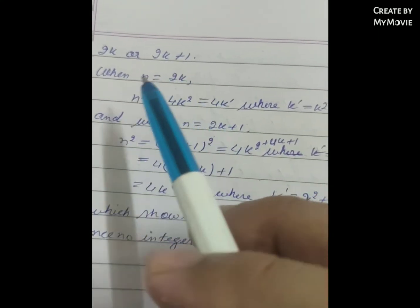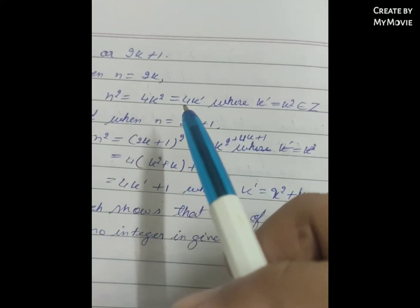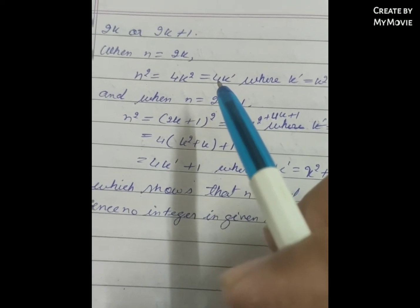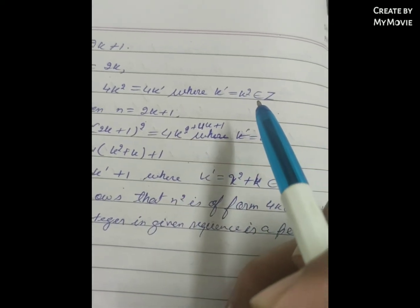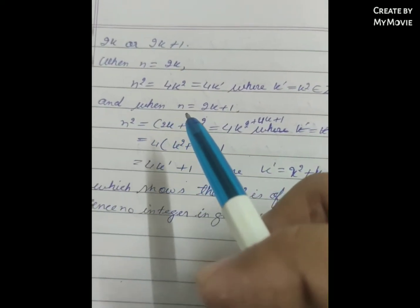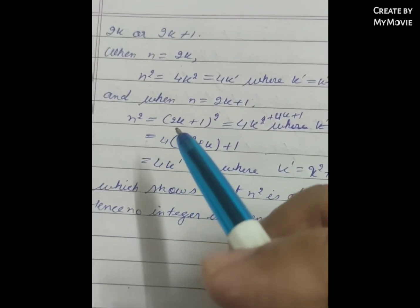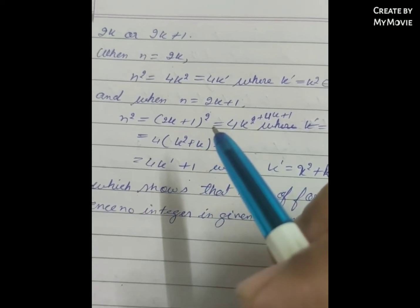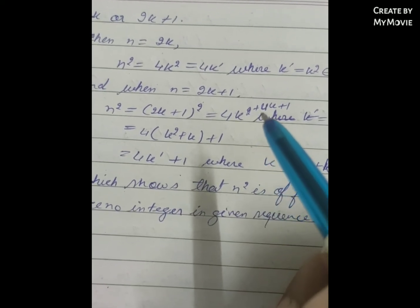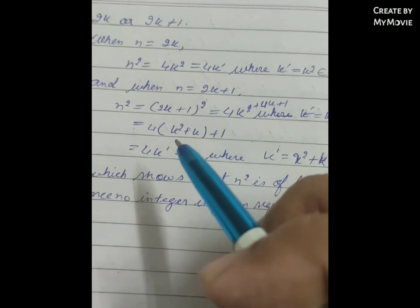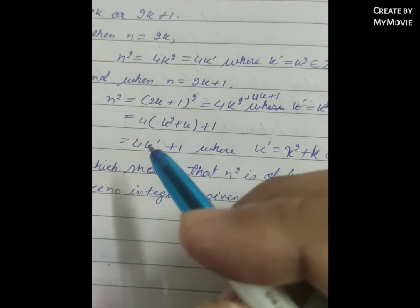When n = 2k, n² = 4k², which equals 4k' where k' = k² ∈ ℤ. When n = 2k+1, n² = (2k+1)² = 4k² + 4k + 1, which equals 4(k² + k) + 1, that is 4k' + 1 where k' = k² + k.